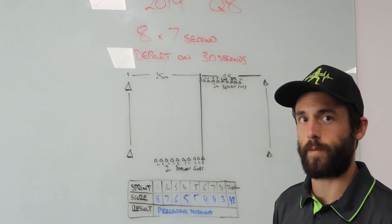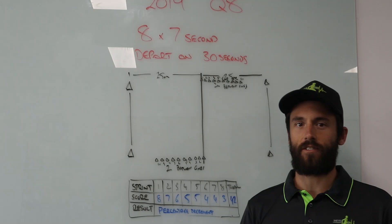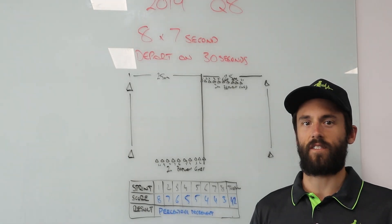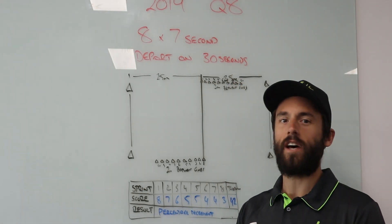We're told we're going to do eight seven second sprints, so we're going to sprint for seven seconds as hard as we can, and we're going to start each sprint on a 30 second cycle.